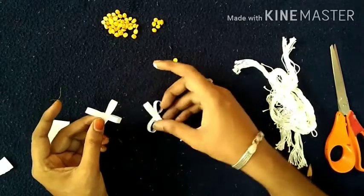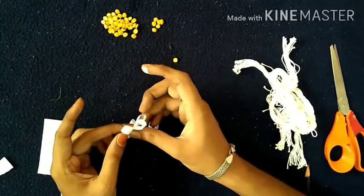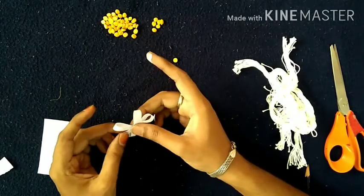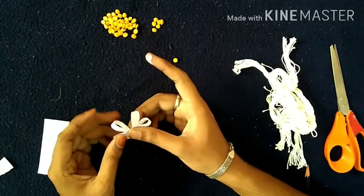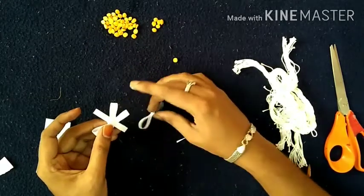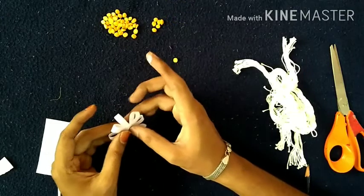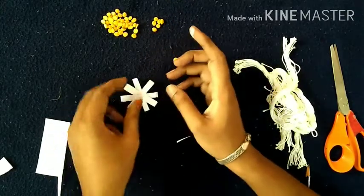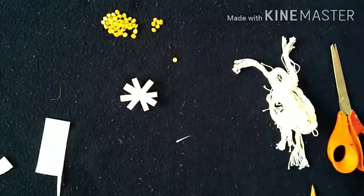First I make one cross match. After that, one more I am adding here. After that, one more. Now it will come like a flower.